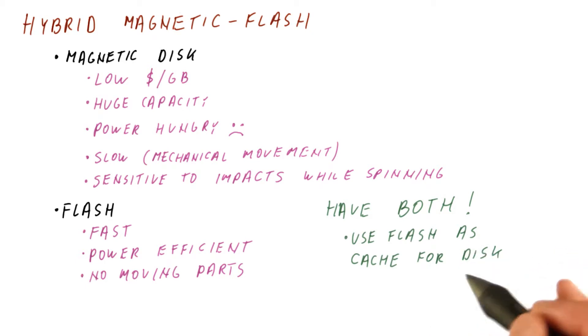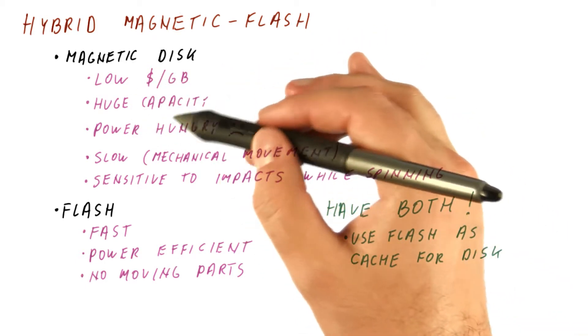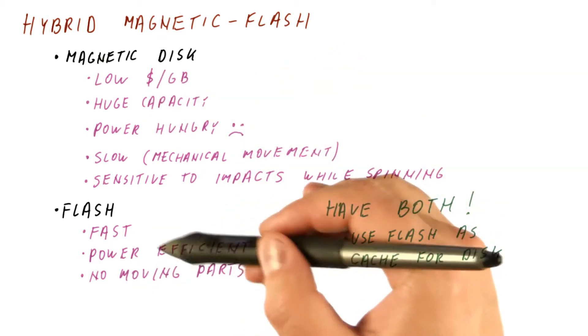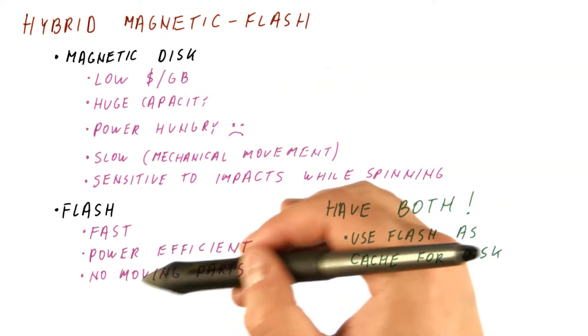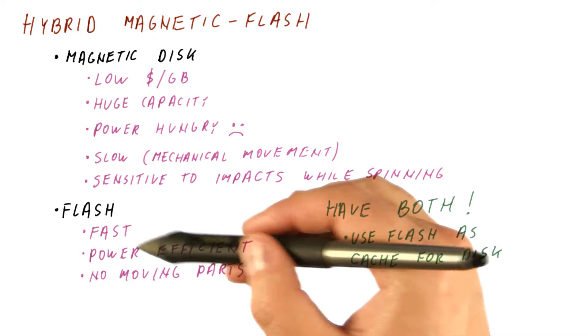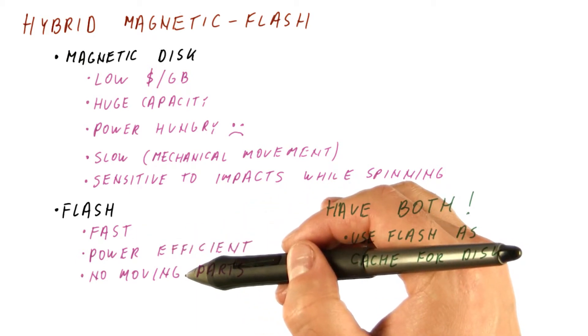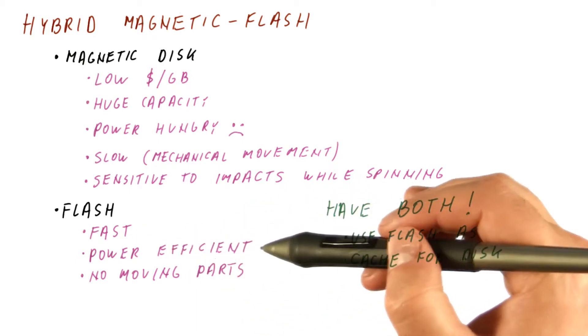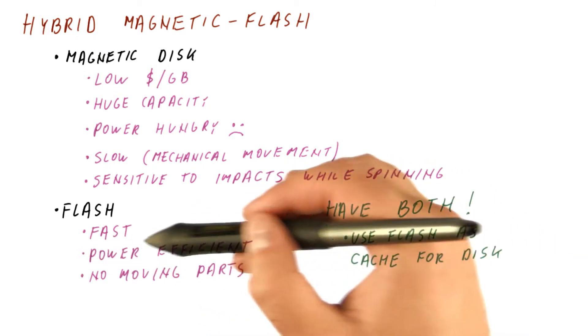Use the flash effectively as a cache for the disk. That way, most of the data is on the disk, but the data we frequently access is on the flash, where it's fast. It can be accessed without moving parts and very efficiently.